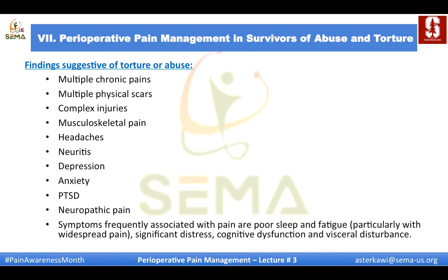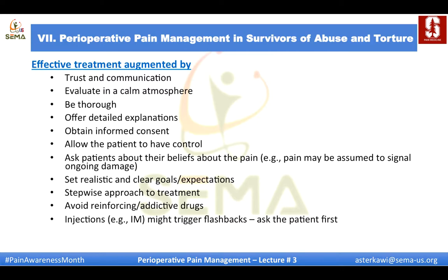Treatment barriers to overcome include language, communication, cultural barriers, memories of helplessness, fear and shame, impaired memory, and non-compliance with treatment and medication due to past forced medication. Findings that suggest torture or abuse include multiple chronic pain complaints, multiple physical scars, complex injuries, musculoskeletal pain, headache, neuritis, depression, anxiety, PTSD, and neuropathic pain. Symptoms frequently associated with pain include poor sleep, fatigue, significant distress, cognitive dysfunction, and visceral disturbance. Effective treatment is augmented by establishing trust, evaluating in a calm atmosphere, being thorough in history and exam, obtaining informed consent, allowing the patient control in their pain management, setting realistic goals, using a stepwise approach, avoiding reinforcing addictive drugs, and avoiding routes of administration such as IM or IV that may trigger flashbacks.